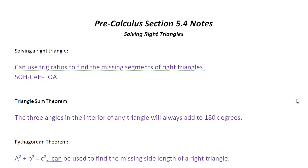In today's section 5-4, we're going to take a look at how to solve right triangles using some of these trigonometric ratios — the sine, cosine, and tangent.